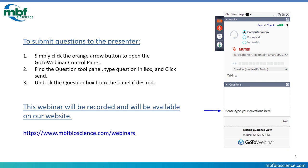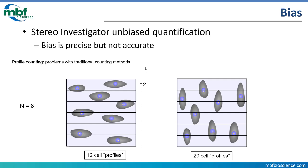Let's get into some bias. The whole point of Stereo Investigator — the whole point of stereology — is that you want to have unbiased quantification, unbiased estimates. Bias is a tricky concept, and it's probably easiest to show with an example. We've got some tissue that's been cut into different sections. In the traditional, biased approach to cell counting that we're trying to avoid, you might pick one of these sections and count what's there.